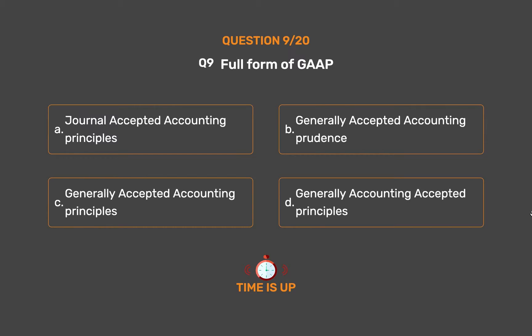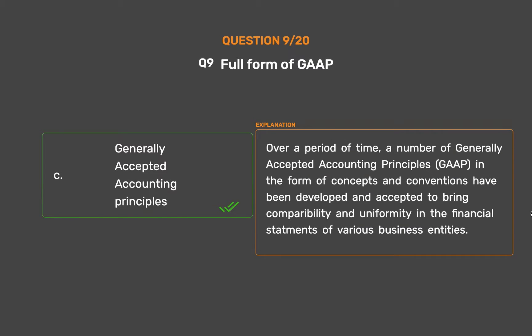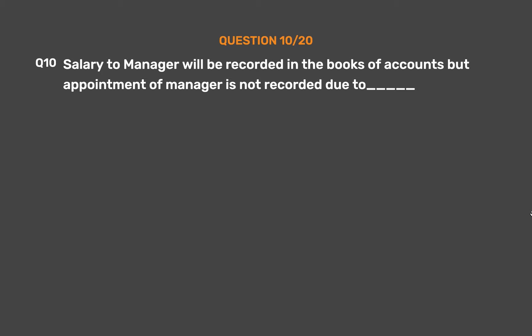The correct answer is Option C: Generally Accepted Accounting Principles. Over a period of time, a number of Generally Accepted Accounting Principles (GAAP) in the form of concepts and conventions have been developed and accepted to bring comparability and uniformity in the financial statements of various business entities.